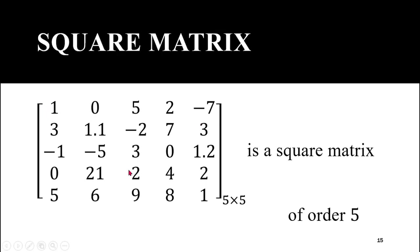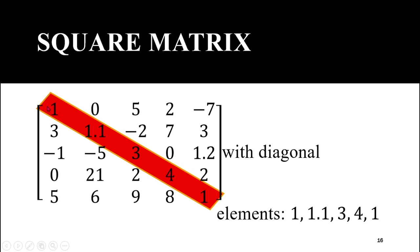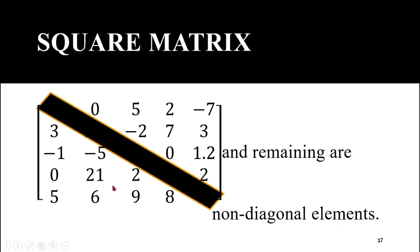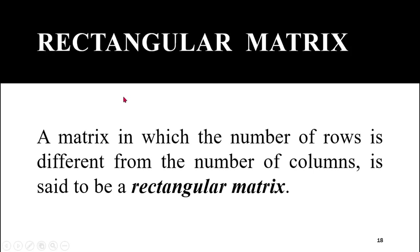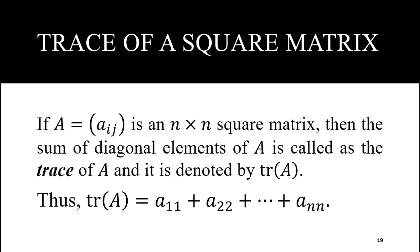This is a square matrix containing five rows and five columns, so it is a 5×5 matrix, or a square matrix of order 5. The diagonal elements are those belonging to the first row and first column, second row and second column, third row and third column, fourth row and fourth column, and fifth row and fifth column. This is also called the main diagonal of the square matrix, and the elements on this main diagonal are called diagonal elements. For this matrix, the diagonal elements are 1, 1.5, 3, 4, and 1, while all remaining elements are non-diagonal elements. A rectangular matrix is a matrix in which the number of rows is different from the number of columns — in other words, a matrix that is not a square matrix is called a rectangular matrix.